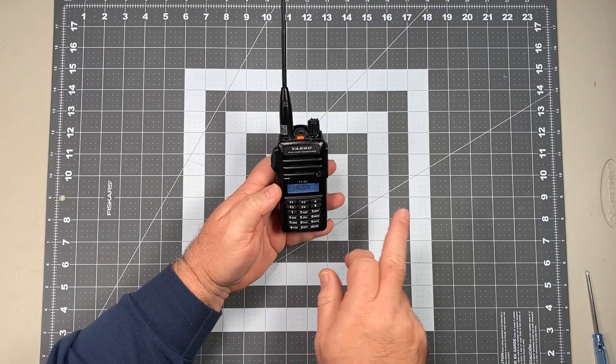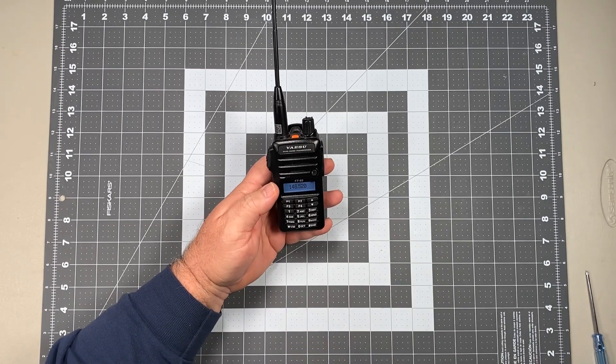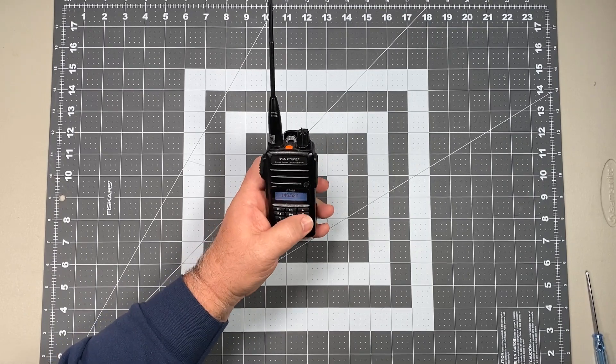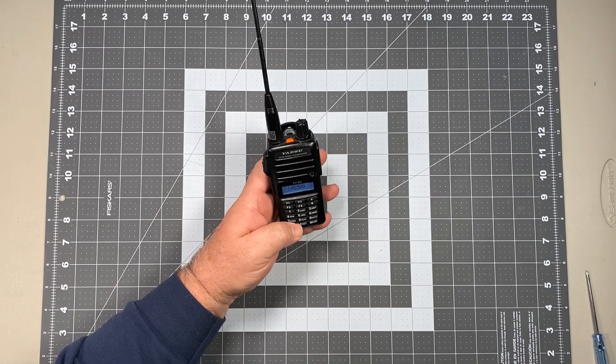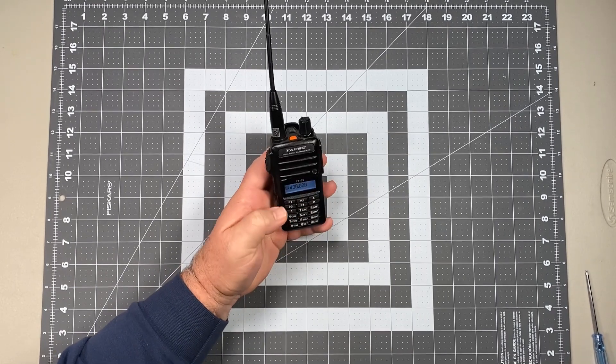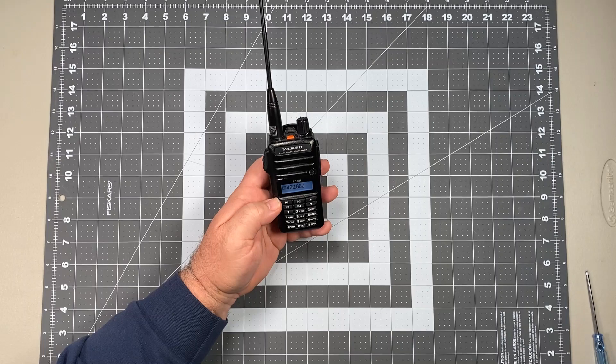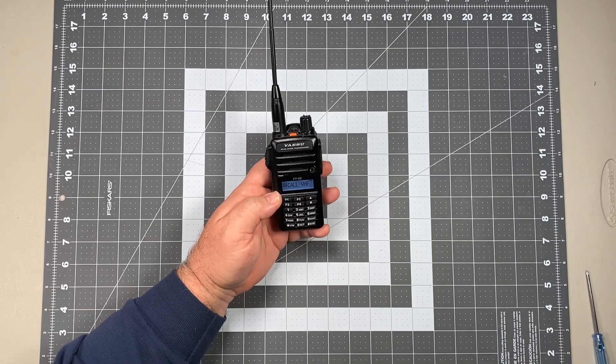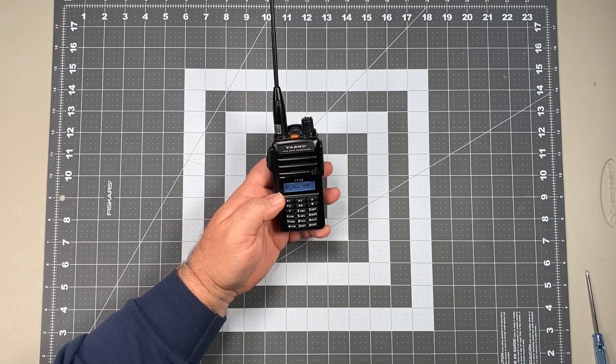It's going to flash MN twice and you are ready to go. So I already have another memory channel in there. Let's go to memory mode here, get out of VFO. I already had memory channel one which was 430. So now we're showing memory channel two is CALL-VHF. And that's simply as easy as it is.